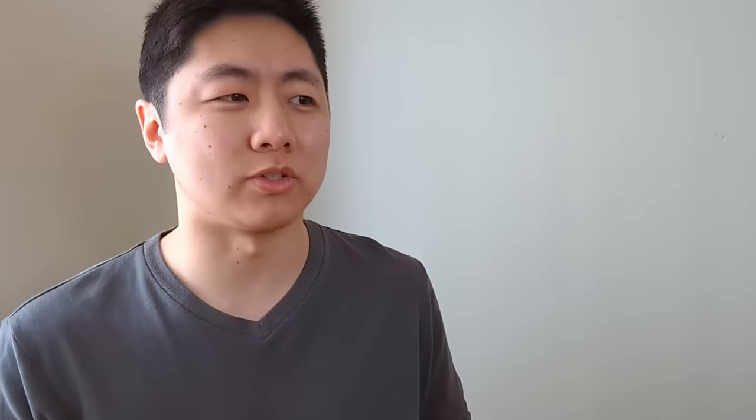No one else got this scramble. Like one of the things about competitions is your whole round gets all the same scrambles. No one got this but Matty. But no one got this but Matty. What if a bunch of other top cubers got the scramble? Like maybe one of them would have gotten a sub 3. So that's not a real world record, right? So it doesn't matter. But someone last year solved a cube in a competition in 3.08.